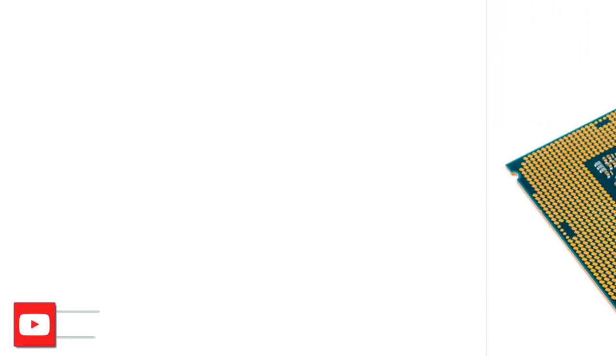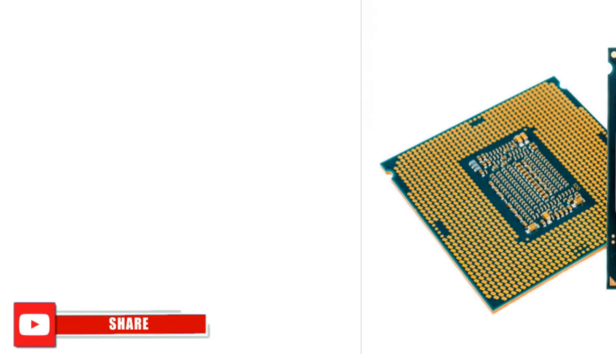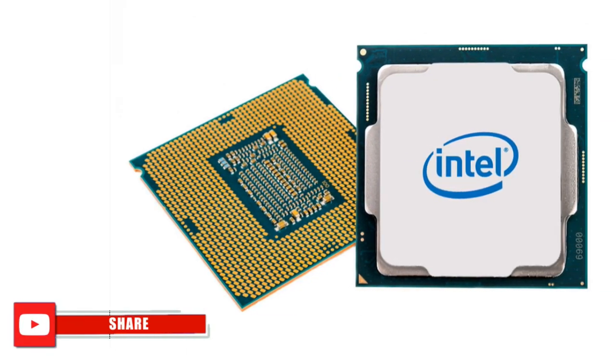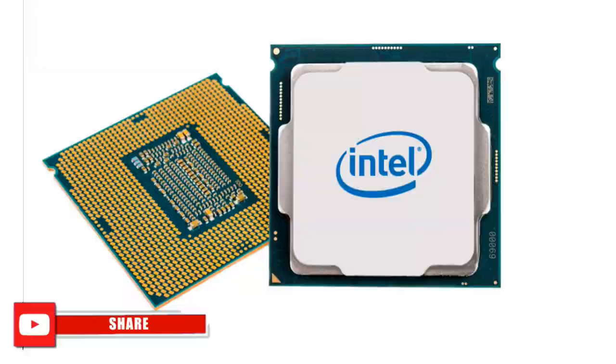What we call a processor is a small microchip. For example, semiconductors, thousands of transistors, resistors, etc. We call this a small processor.